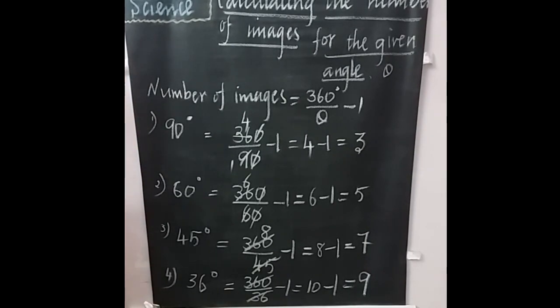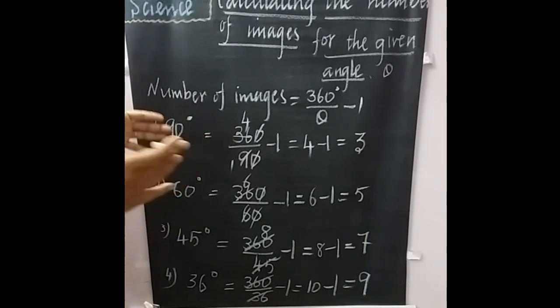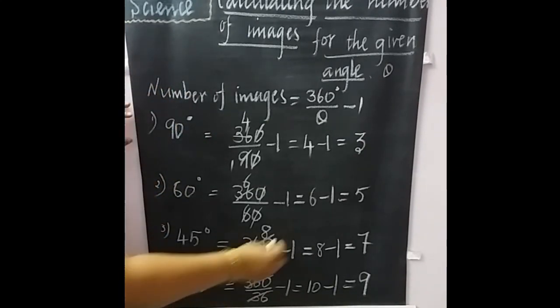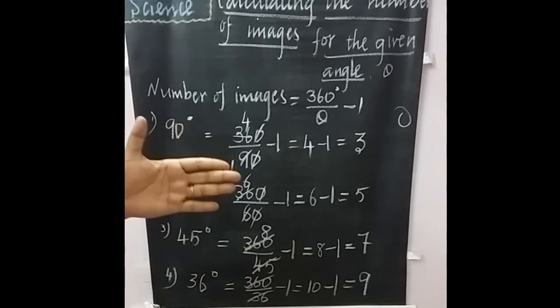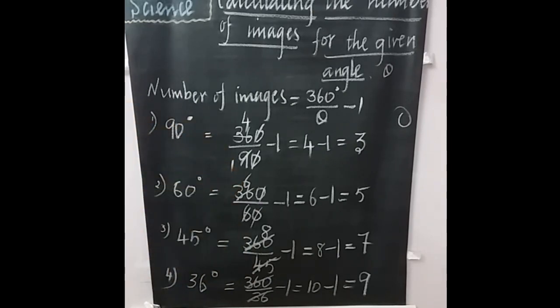Now what would happen when the mirrors are parallel, that is without angle? Angle 0. An infinite number of images can be seen. The images become smaller and fainter as the distance from the mirror increases.